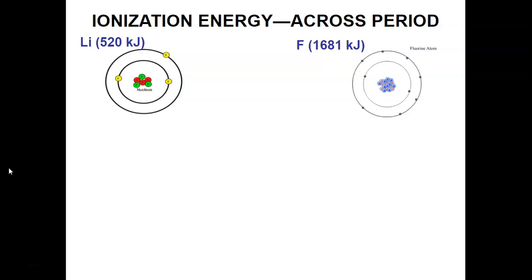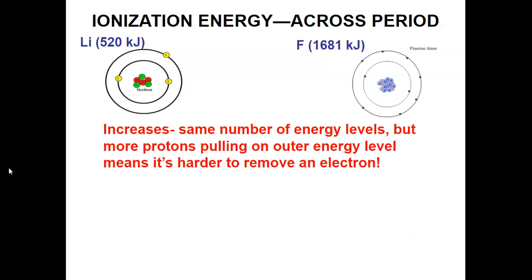As we go across a period, ionization energy increases. Think back to atomic radius: across a period, the energy levels stay the same but protons increase. Ionization energy increases because I have the same number of energy levels but more protons pulling on the electrons in the outer energy level, making it much harder to remove an electron. Fluorine is like a bodybuilder and lithium is like a baby — it's much easier to take something from a baby. Fluorine's many protons keep a very strong grip on those valence electrons.